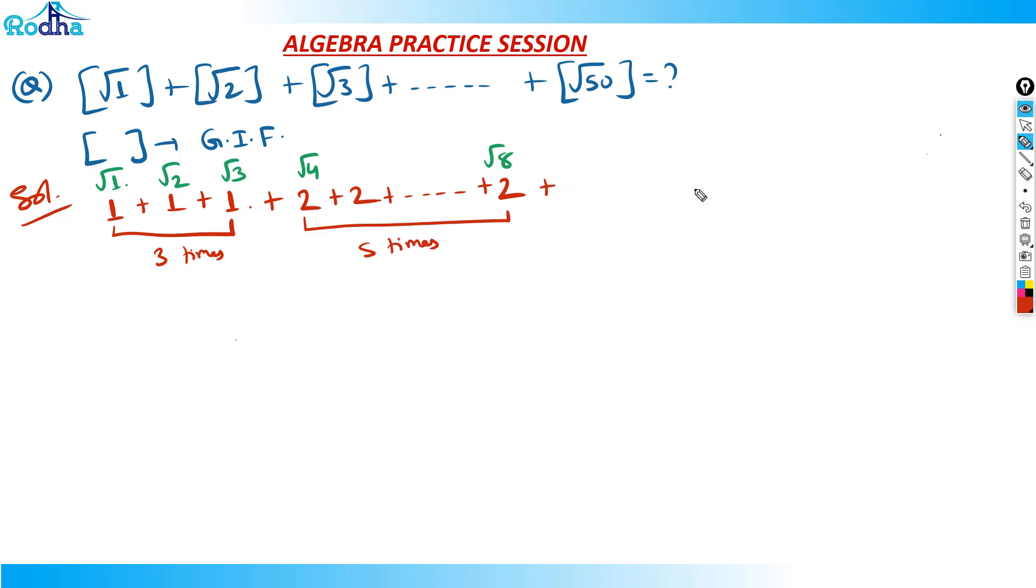Then it starts from √9. √9 to √15, because √15 is 3 point something and √16 becomes 4. So √9 to √15, 3 is starting from 3 and it goes till √15 is again 3. How many times will 3 occur here? 9 to 15, 7 times. 3 will appear 7 times. And now we got the pattern - 3 times, 5 times, 7 times.